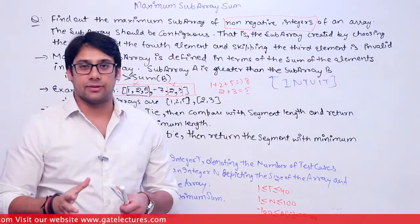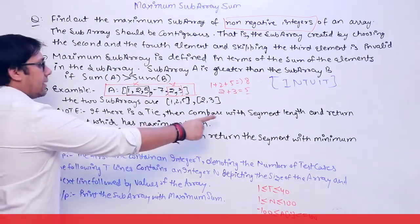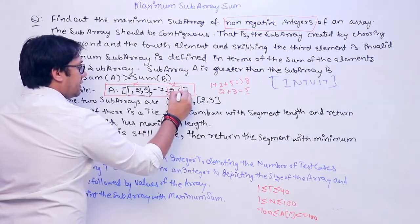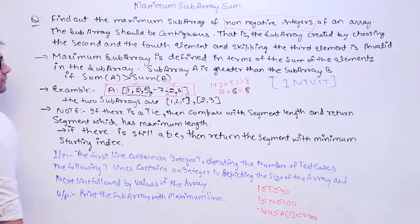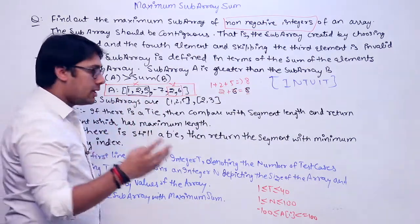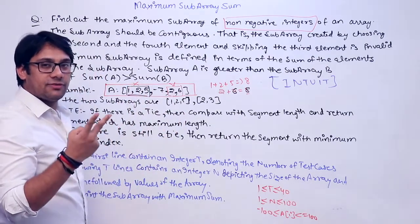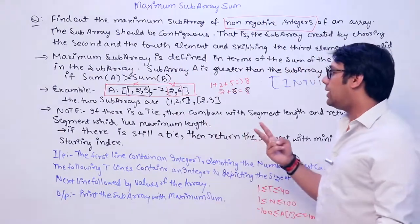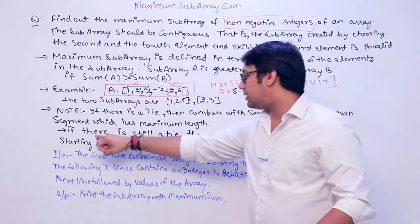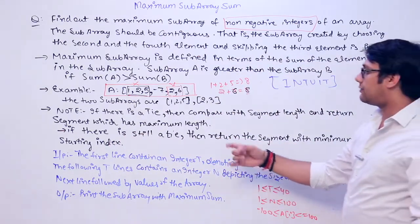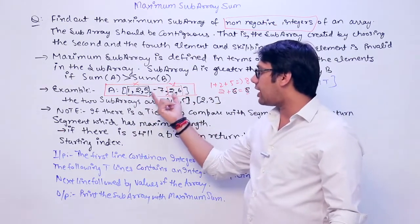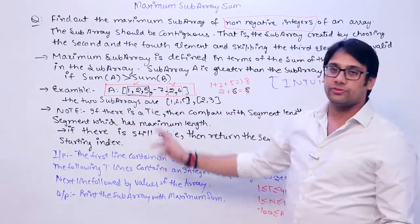If there is a tie in sums, compare by segment length — return the subarray with the maximum length. For example, if both subarrays have sum 8, but one has length 3 and the other has length 2, return the one with length 3. If there is still a tie in both sum and length, return the segment with the minimum starting index — that is, the one that begins earliest in the array.